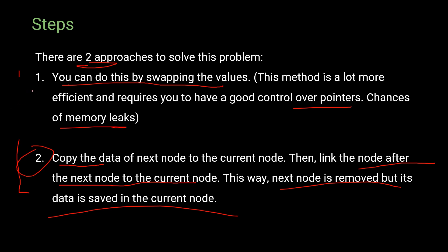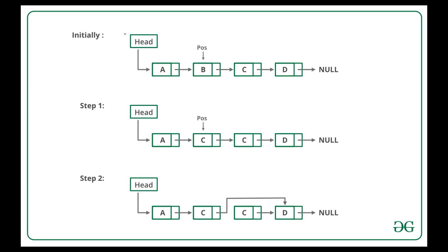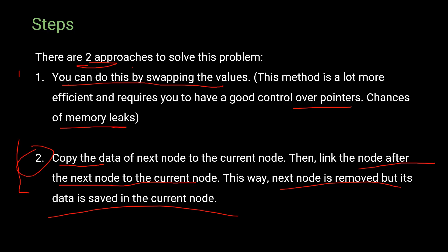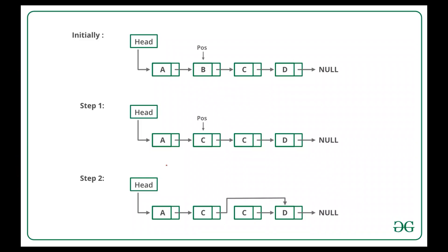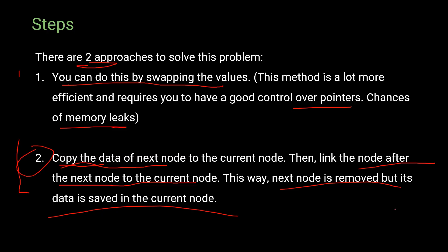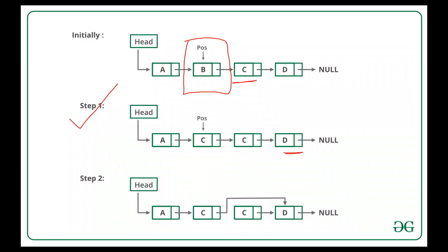We'll implement the second approach first since it's simpler, and then show the first approach with pointers. In the diagram, the node to delete is B. First, we copy the data from the next node C into node B. Then we link the node after C to the current node B by adding its reference in the next part. Finally, we delete that extra node, and we're good to go.